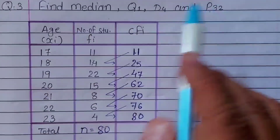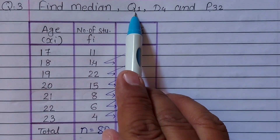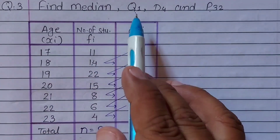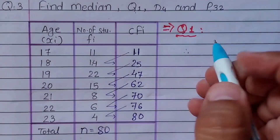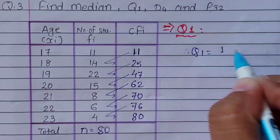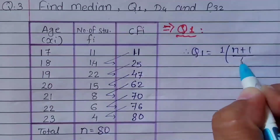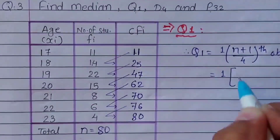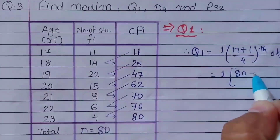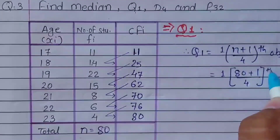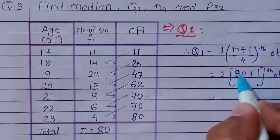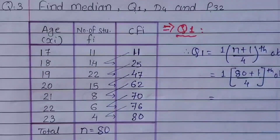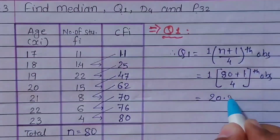We have to find the 1st quartile, 4th decile, and 32nd percentile. For Q1, the formula is 1 × (n+1) / 4th observation. So 1 multiplied by the value of n = 80, plus 1, divided by 4. 80 plus 1 will be 81, and 81 divided by 4 will be 20.25.